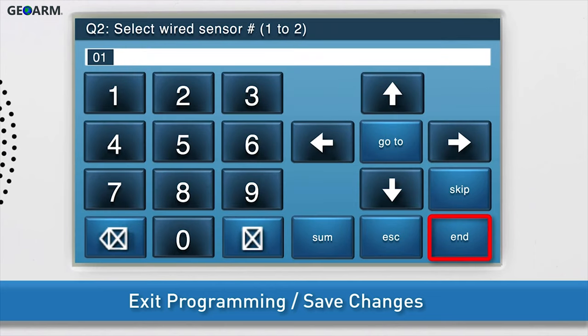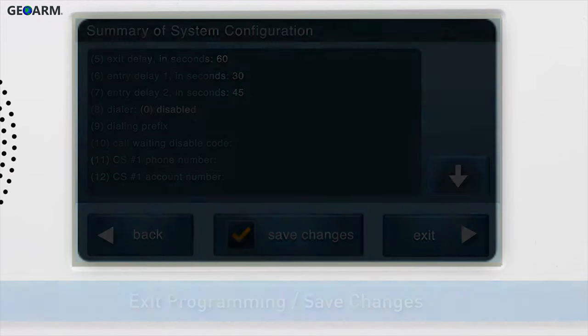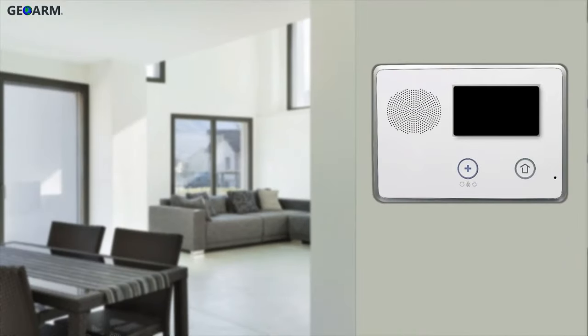Then press End. The option to save changes is selected by default. Finally, press Exit. The system will automatically save the new information, and the panel will reboot.